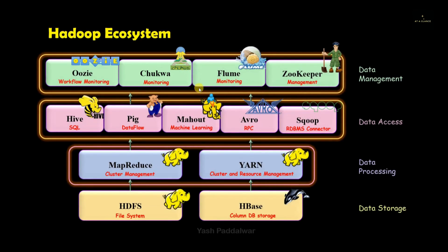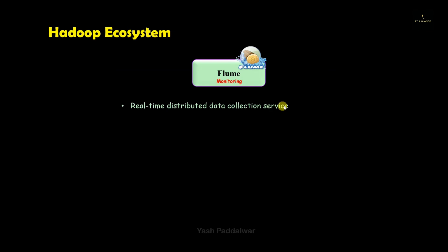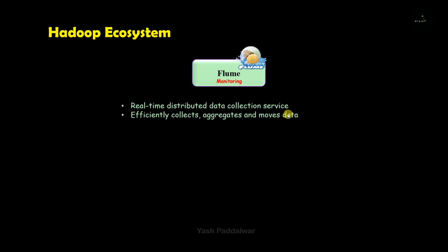The next component inside the data management section is Flume. This component is also used for monitoring — it is a real-time distributed data collection service. The key word here is real-time, which makes Flume particularly important and popular. It not only collects batch data but collects real-time distributed data, aggregates it, and can also move the data efficiently. It is powerful, reliable, and flexible.